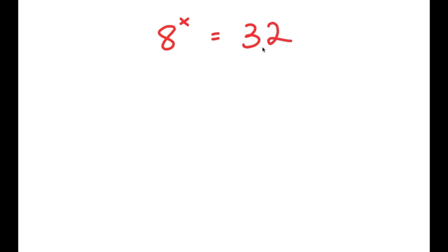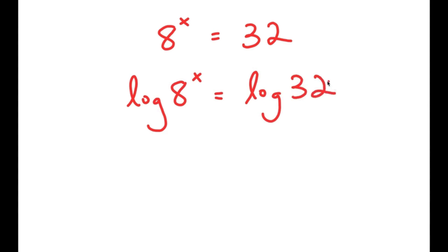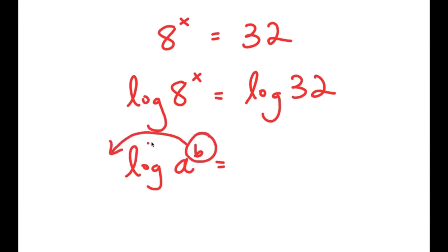In this video I'm going to solve the equation 8 to the power of x is equal to 32. To solve this I'm going to start by taking the log on both sides, so I get log of 8 to the power of x is equal to log 32. Now if I have something in the form log of a to the power of b, I can move the exponent b to the front of the logarithm — so log of a to the power of b is equal to b times log a.